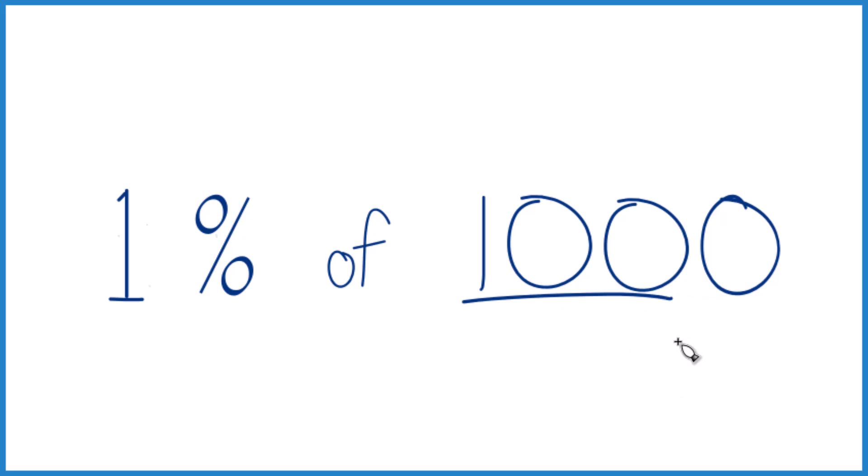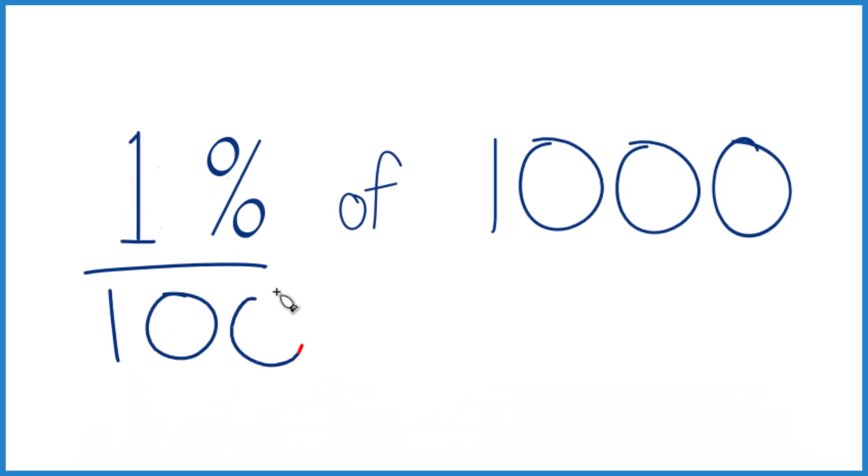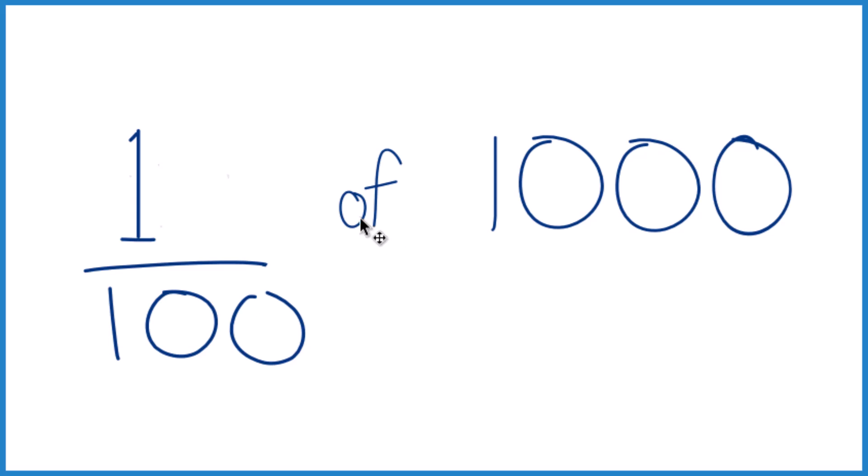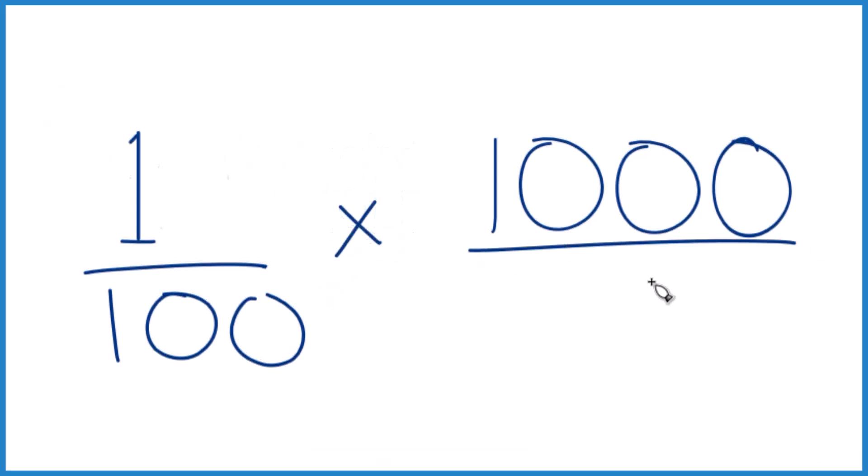Here's another way you can do it. You could consider percent - that means per 100. So 1% is 1 over 100. Get rid of this. And of, we're going to call that multiplication. Let's call it 1,000 over 1. It's still 1,000, but now everything lines up.